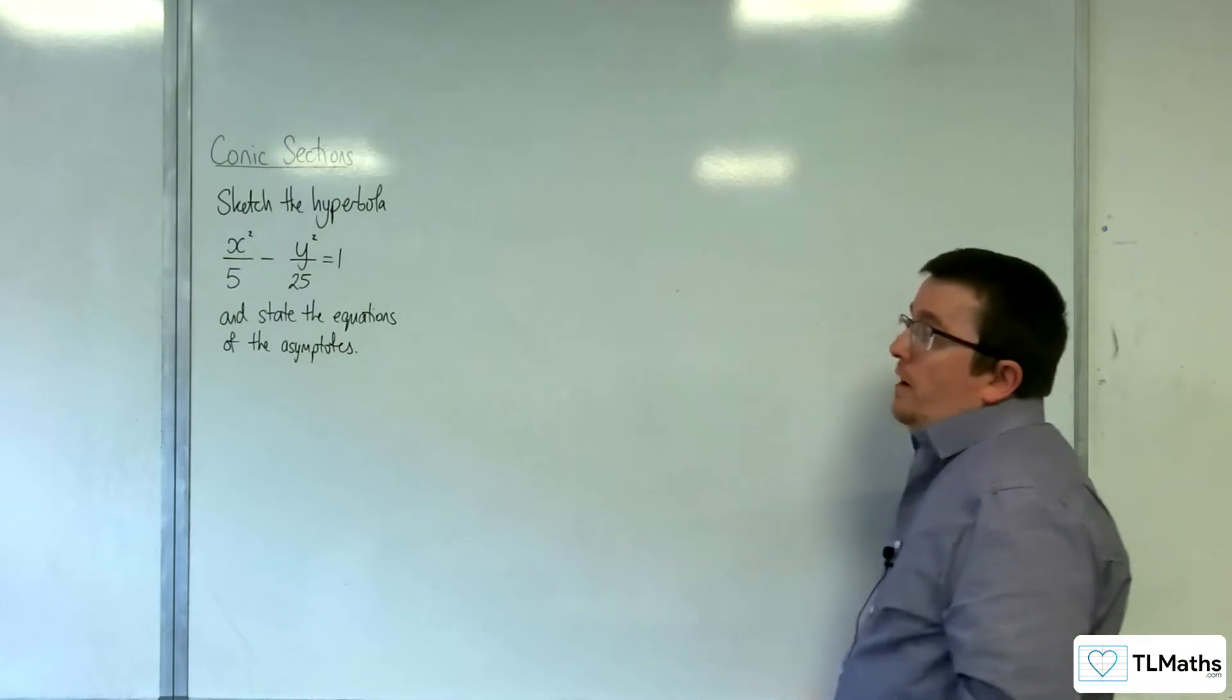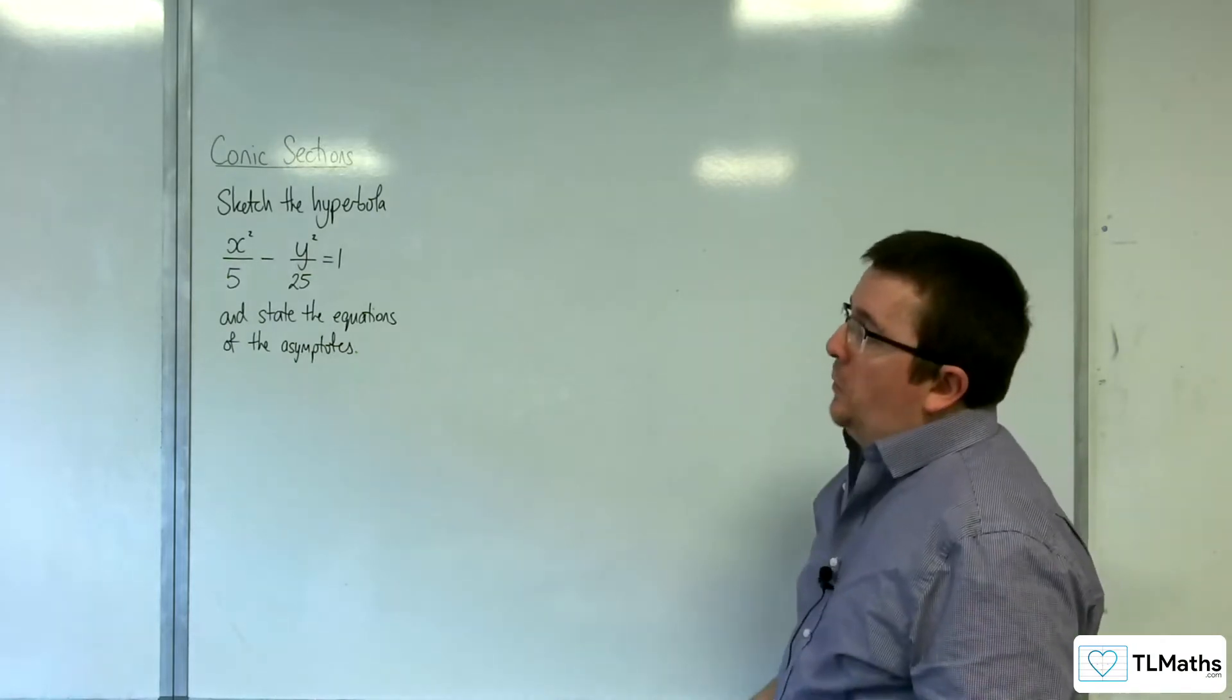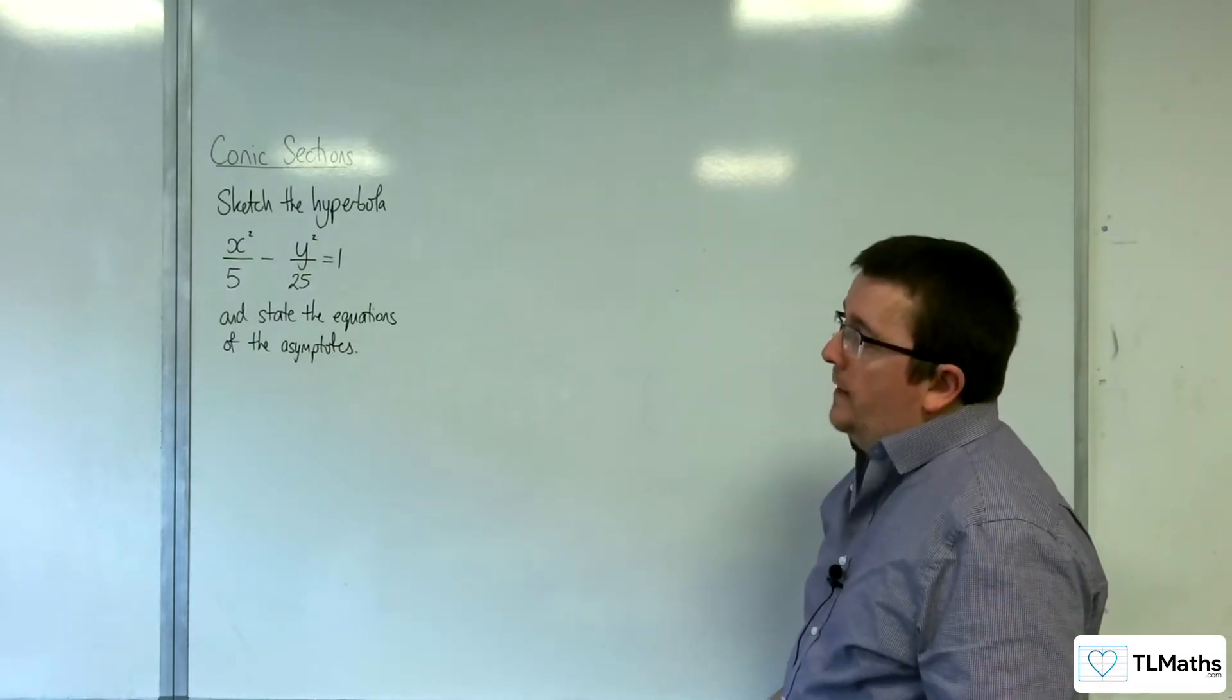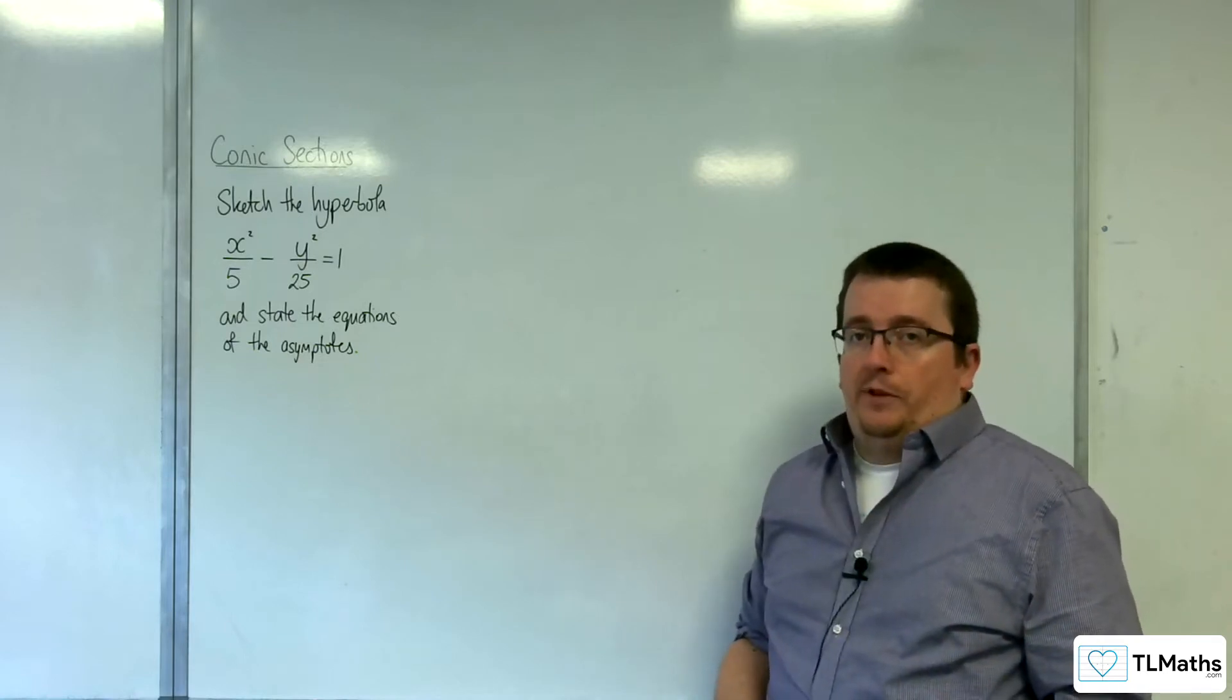In this video, I'm going to be sketching the hyperbola x²/5 - y²/25 = 1 and stating the equations of the asymptotes.